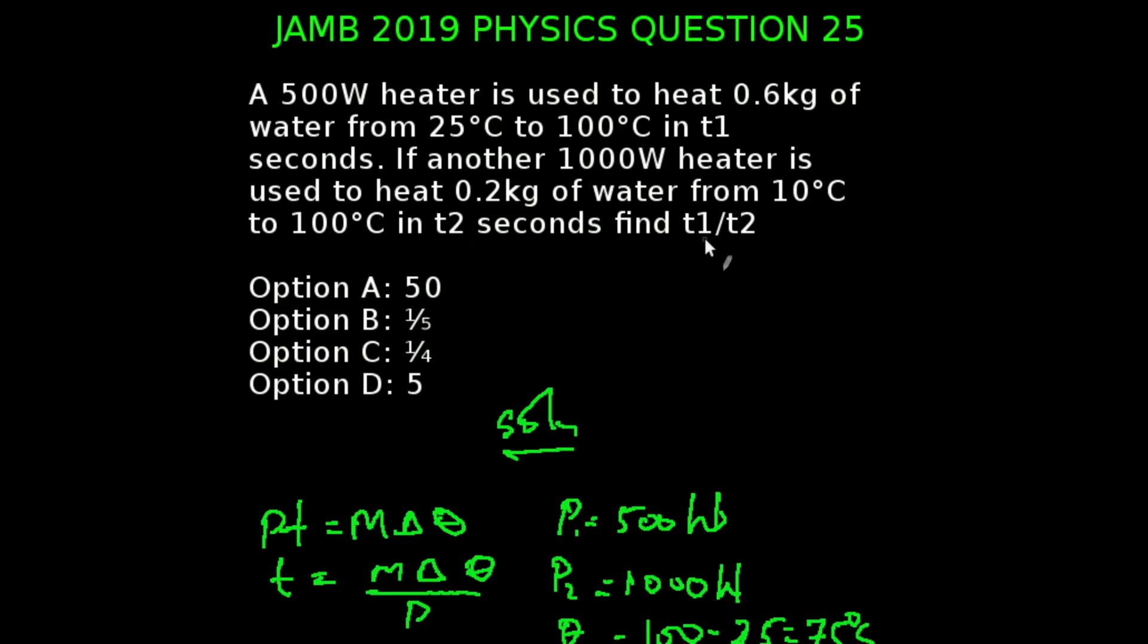You're looking at question 25 of the JAMB 2019 physics examination. A 500 watts heater is used to heat 0.6 kg of water from 25 degrees Celsius to 100 degrees Celsius in T1 seconds. If another 1000 watts heater is used to heat 0.2 kg of water from 10 degrees Celsius to 100 degrees Celsius in T2 seconds, find the ratio of T1 to T2.